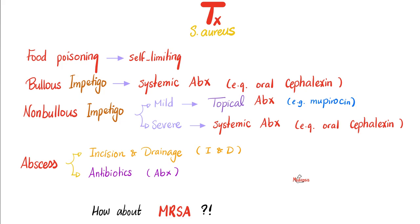For impetigo, it depends on the type. Bullous impetigo is caused only by Staph aureus — not Streptococcus. It is severe and treated only systemically, not topically, using systemic antibiotics.